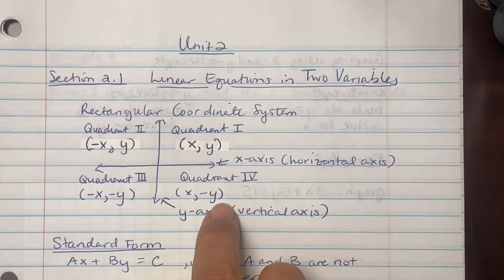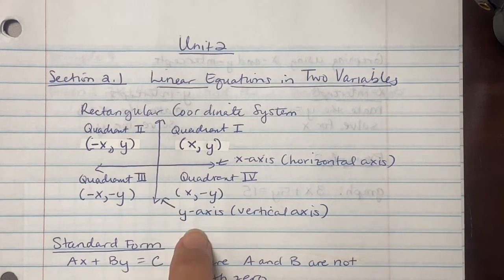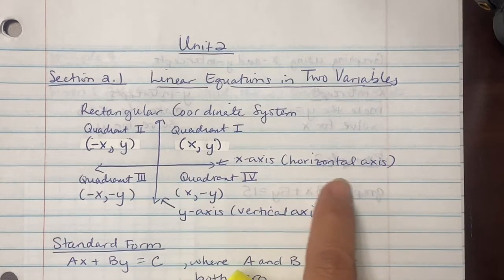...quadrant 4, positive x, negative y. Remember that this vertical line going straight up and down is known as your y-axis, and the line going left to right, which is your x-axis, is also known as your horizontal axis.